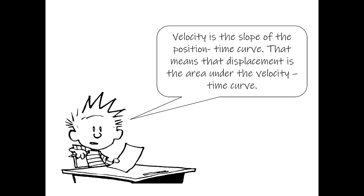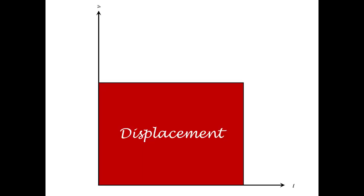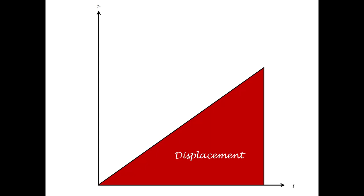That means displacement is the area under the velocity-time curve. If we plot velocity as a function of time, the area under that velocity-time curve ends up being our displacement — whether we have a constant velocity or an increasing velocity, the displacement is the area under the velocity-time curve. That's an important concept we'll come back to.